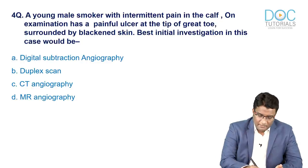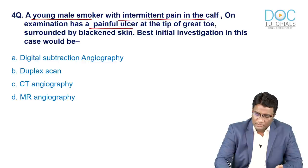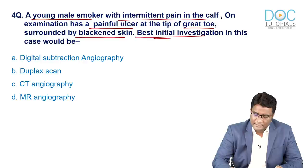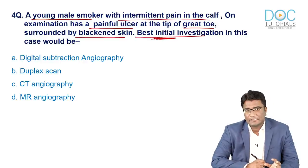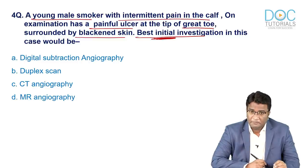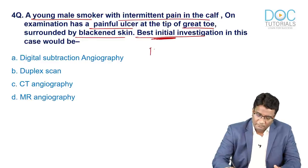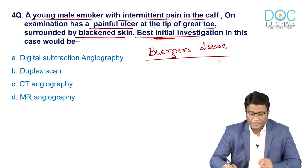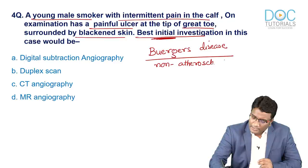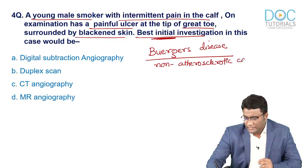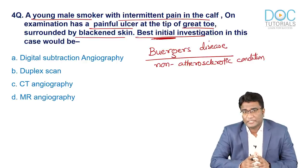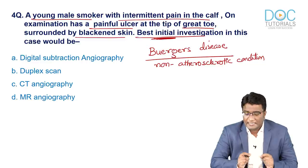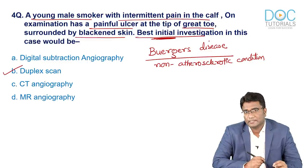Next question: a young male smoker with intermittent pain in the calf has a painful ulcer on the great toe surrounded by blackened skin. What is the best initial investigation? This is classic Buerger's disease (thromboangiitis obliterans) — a non-atheromatous condition in a young male smoker with intermittent claudication and no other atherosclerotic risk factors. The best initial investigation is a color Doppler duplex ultrasound.